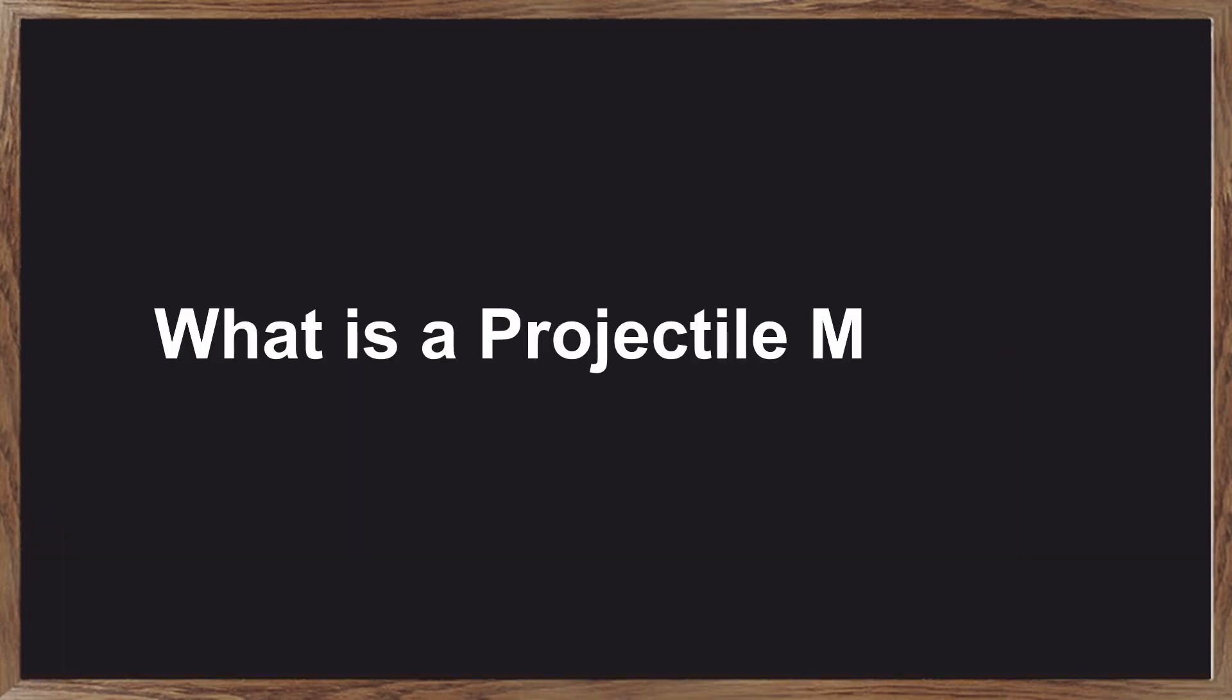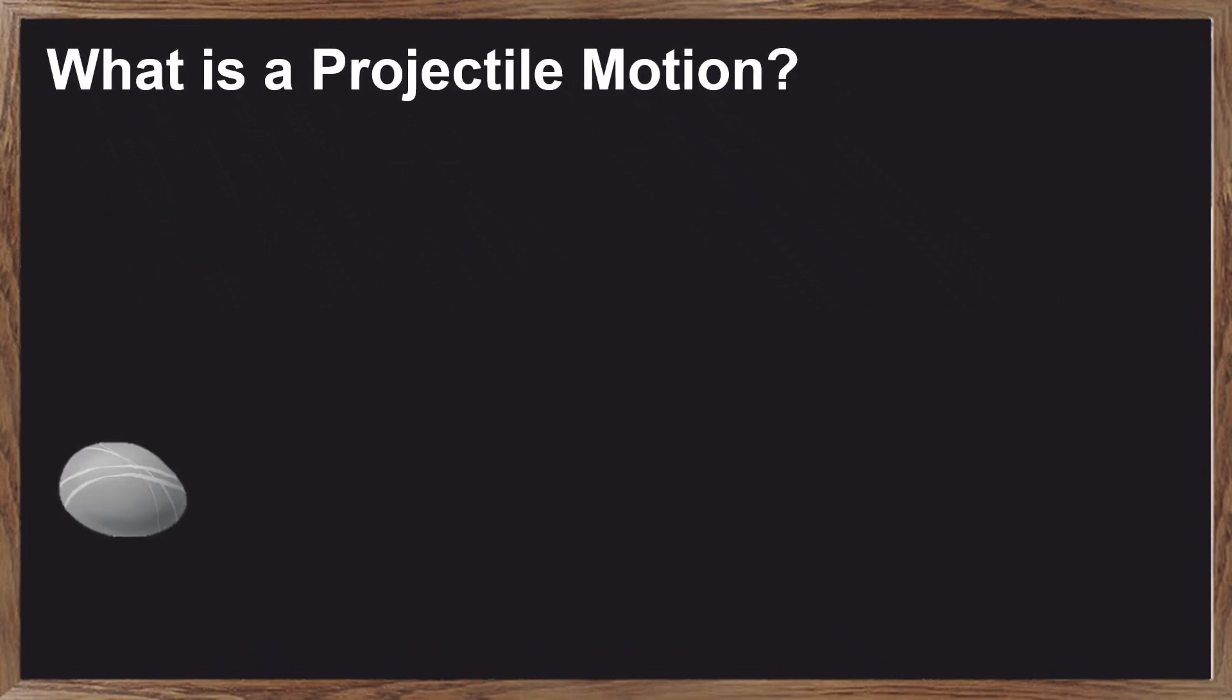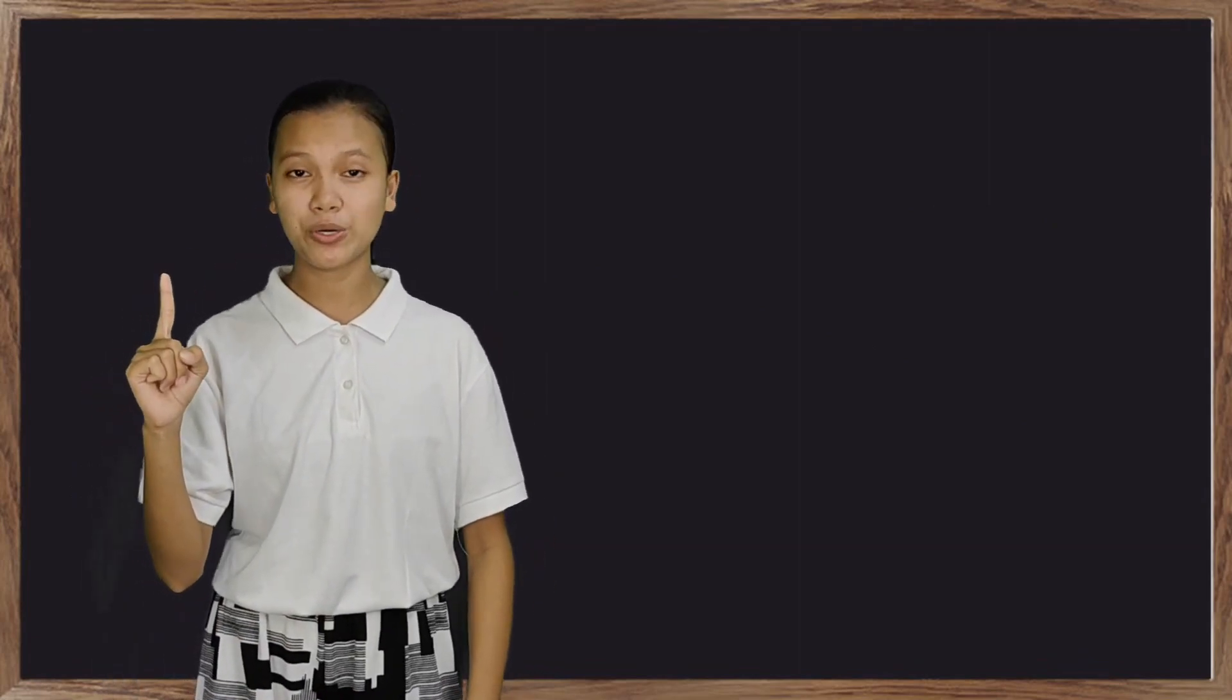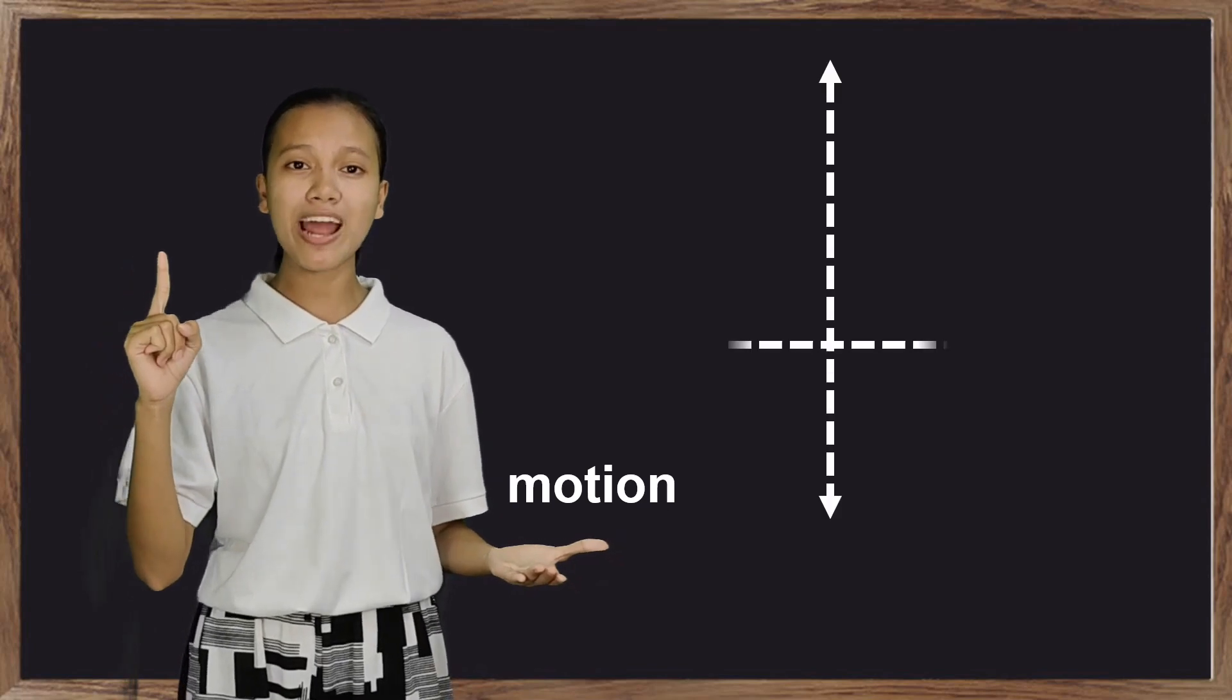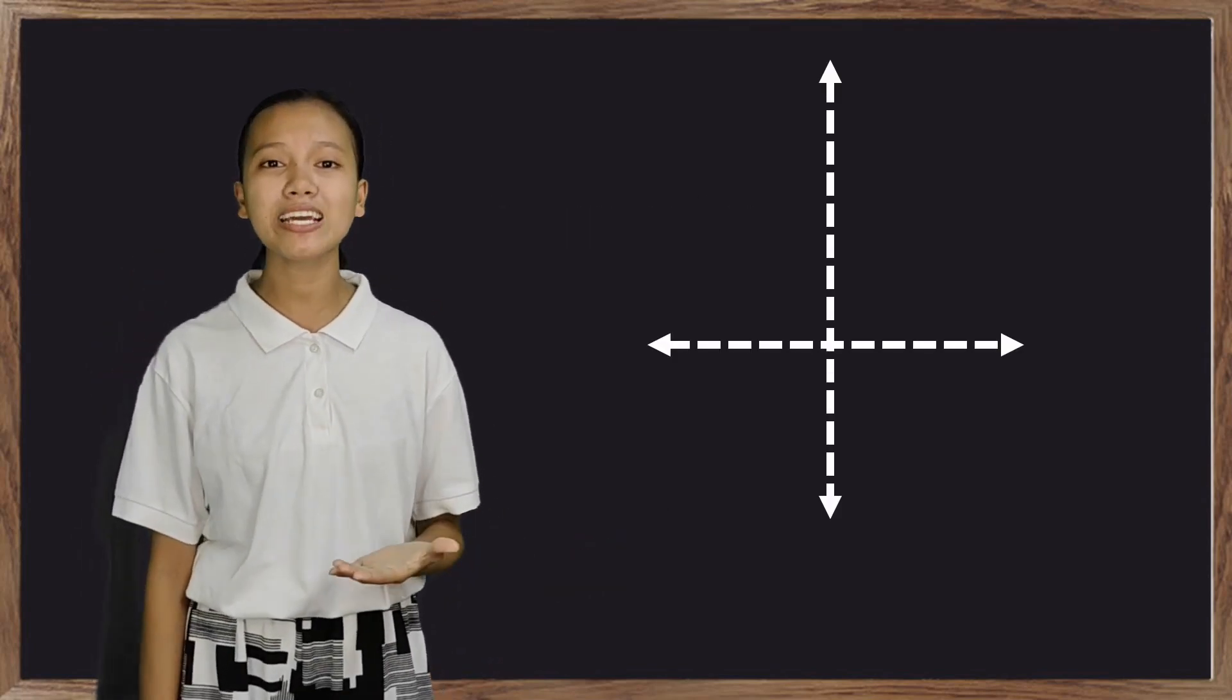What is a projectile motion? A projectile motion is the motion of an object thrown or projected into the air, subject to only the acceleration of gravity. The stone is called the projectile, while its path is called the trajectory or parabola. One of the most important facts to remember here is that the motion along the perpendicular axes are independent and thus can be analyzed separately.